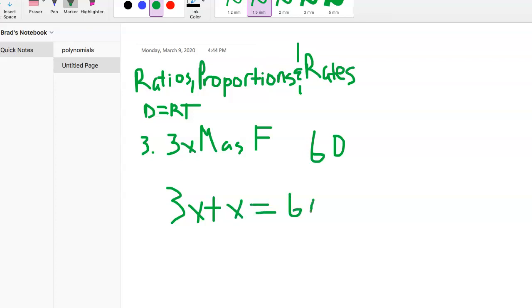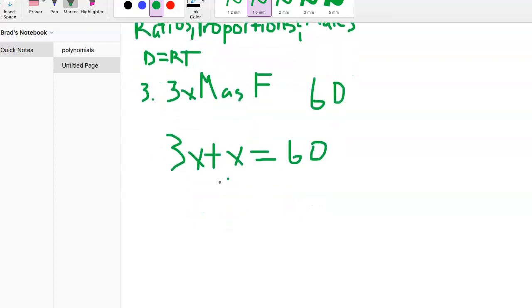3X plus X is 4X. 4X equals 60. Divide each side by 4. 60 divided by 4 is 15. X is 15. That's the females. We said males were three times as many in this example, so 15 times 3 is 45. We would have 45 males, 15 females. 45 plus 15 is 60. That's all we need to know.